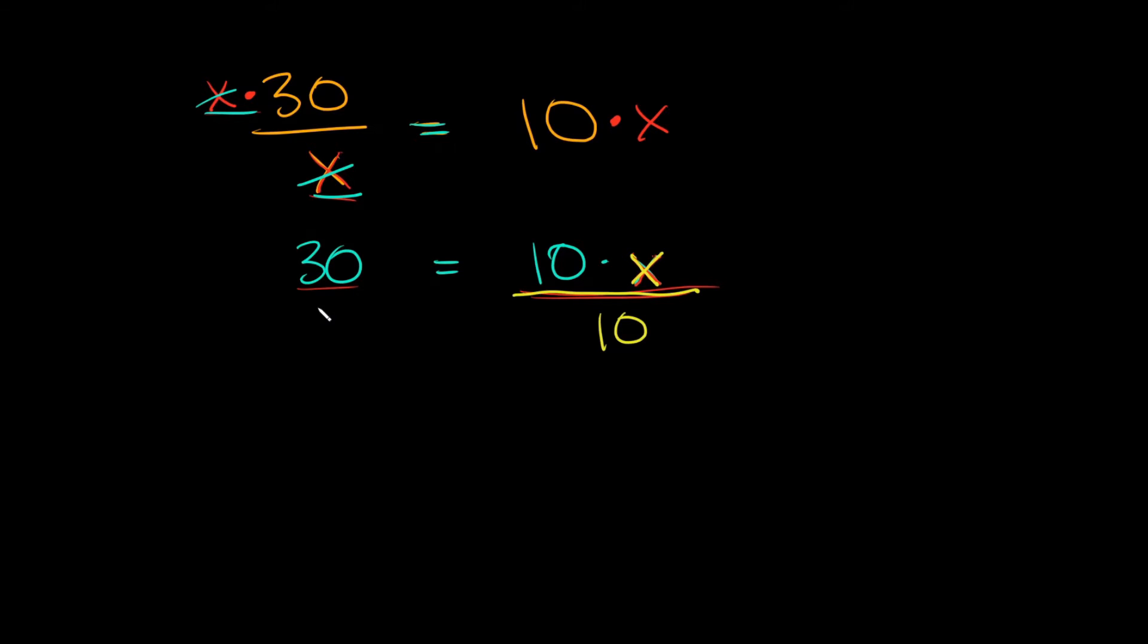And remember, what you do to one side you do to the other. So now we can simplify some things again. We have the same number on top and the bottom so they cancel out. On this side all we're left with is x.